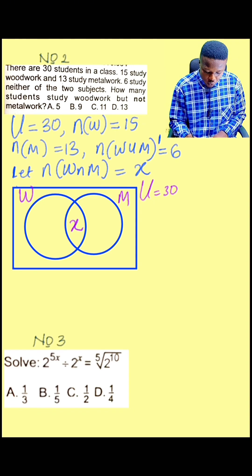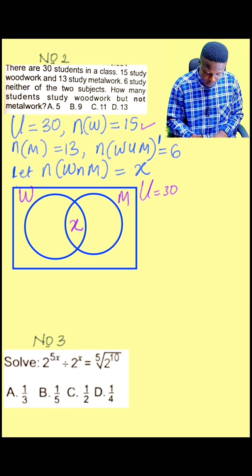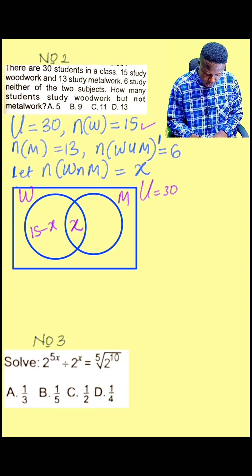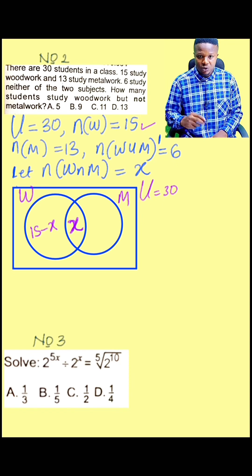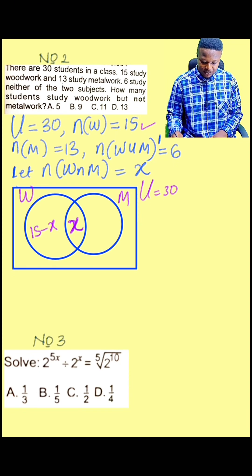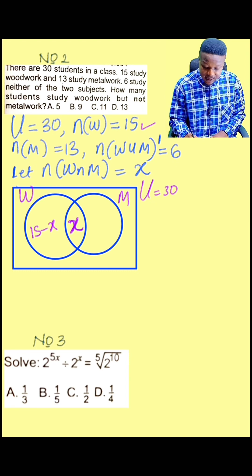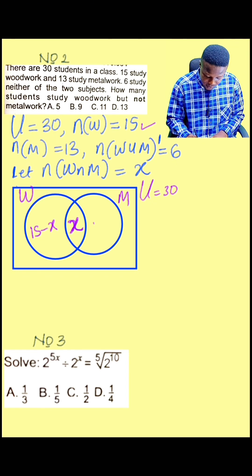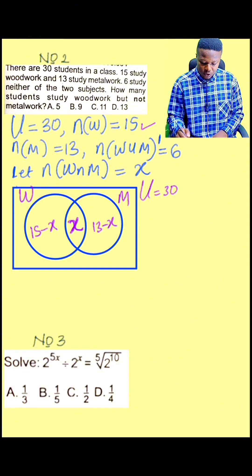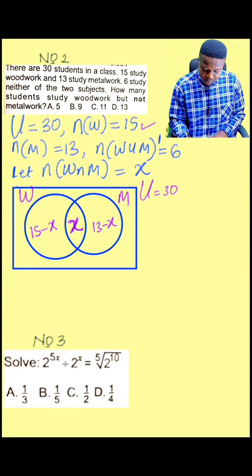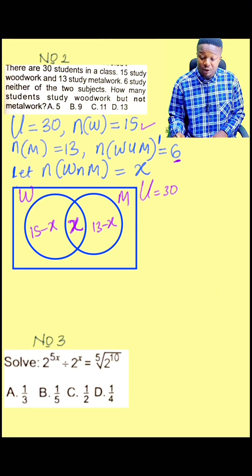How many woodwork do we have? There are 15 woodwork. You call it 15 minus X because X here is already existing in the part of W. So it's going to be 15 minus X. Then metal work is 13, so we still have 13 minus X. Six students are not in metal work and also woodwork.